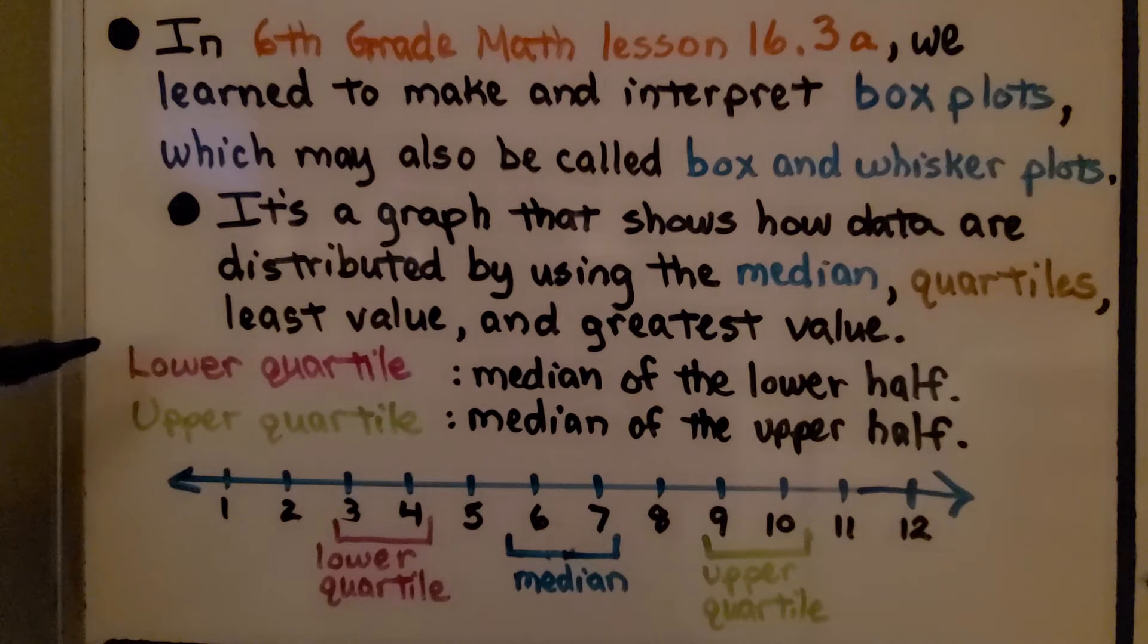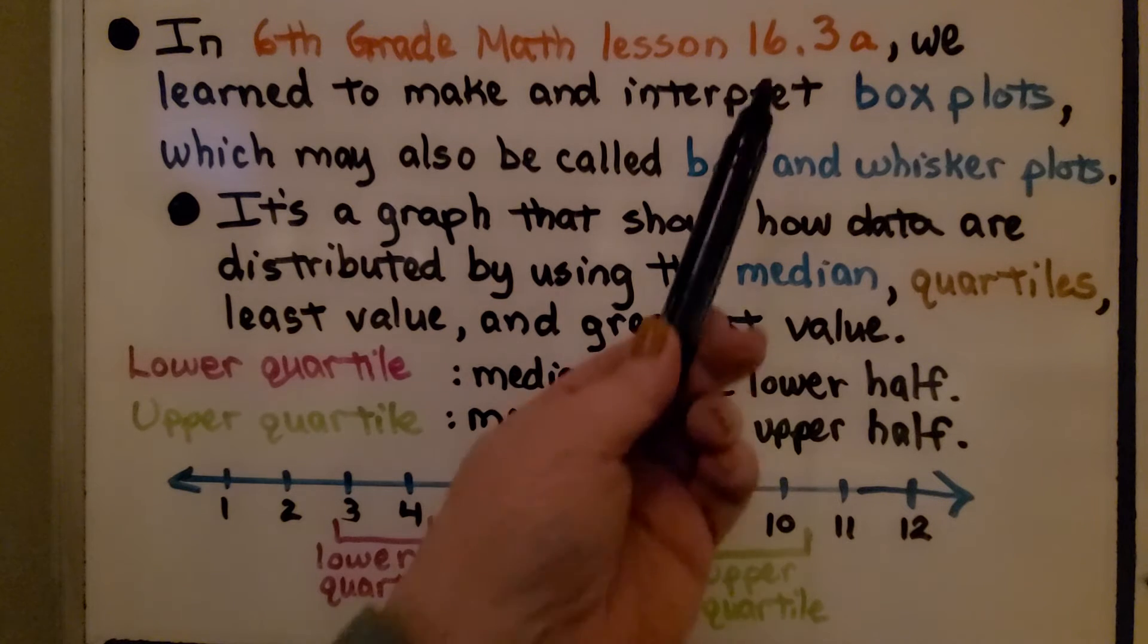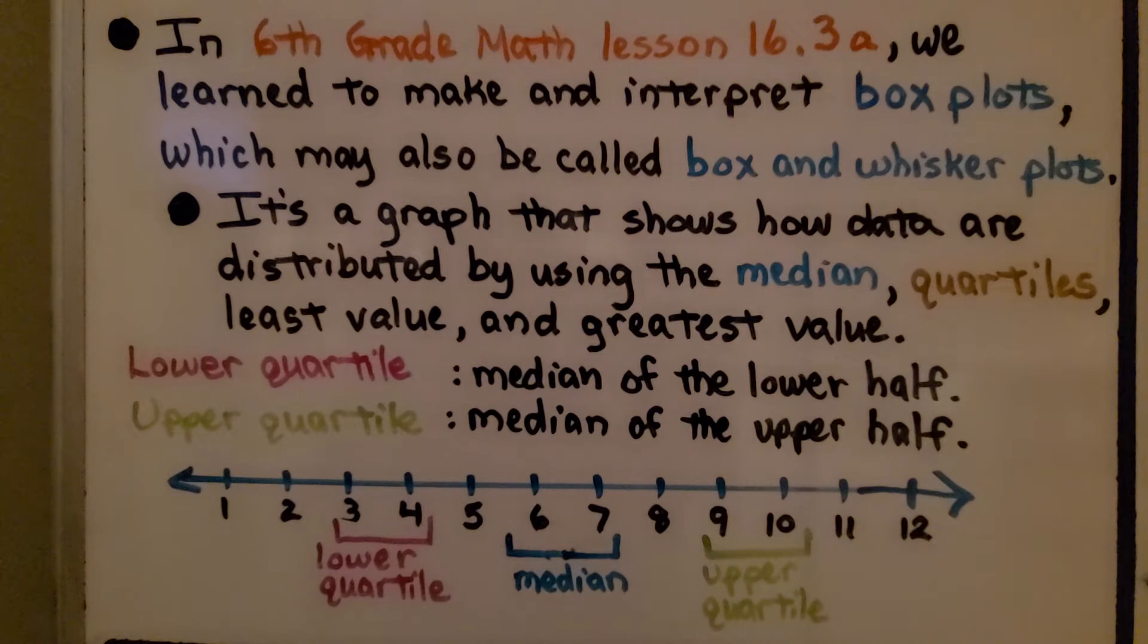The lower quartile is the median of the lower half. The upper quartile is the median of the upper half. Now, it's been quite a while since we did lesson 16.3a back in 6th grade, so we're going to do a real quick review of these quartiles and the median and everything. Once we've got our memory back, we'll do some qualitative inferences.